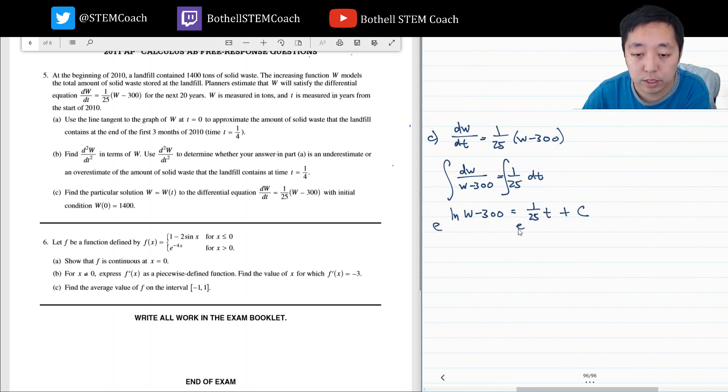Plus some constant. Then I do e to both sides, so I get, that gets rid of the natural log, because I'm solving for W. W minus 300 is e to the 1/25 t plus c. This I can rewrite as e to the 1/25 t times e to the c, because when I add exponents, I can break them out like this, and then this is just, I replace with another constant, arbitrary constant. I could call it c1 or some other letter.